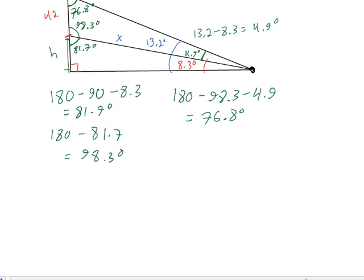The sine rule in general says that a side divided by the sine of the angle opposite to it, so side x divided by the sine of 76.8 degrees is equal to any other side, such as 42 meters, divided by the sine of the angle across from it. In this case, 4.9 degrees is opposite 42 meters.